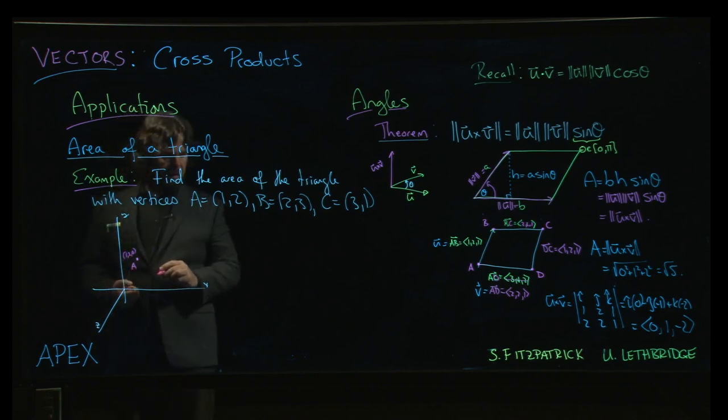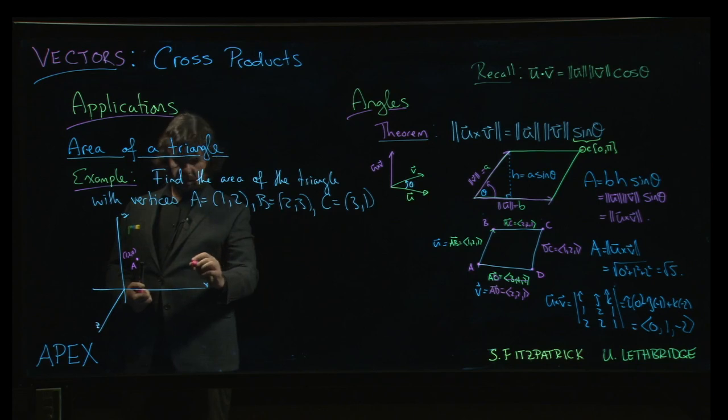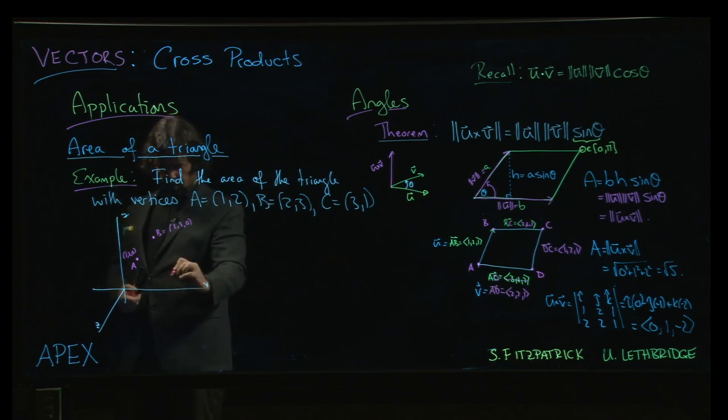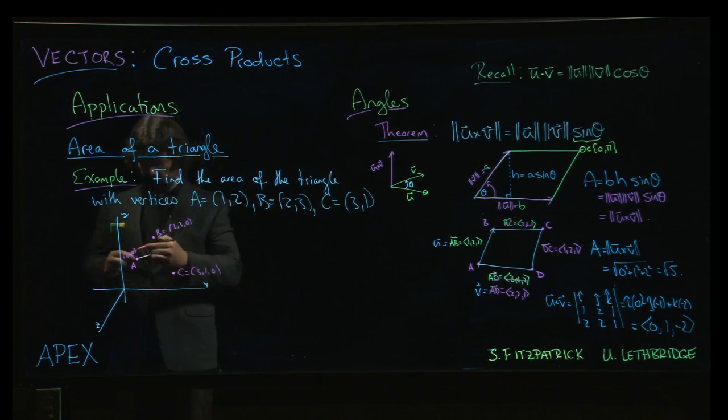0. And we say the point B is at 2, 3, there's B, we'll think of that as 2, 3, 0. And that point C, which is at 3, 1, we'll think of that as 3, 1, 0. We can do it like that.